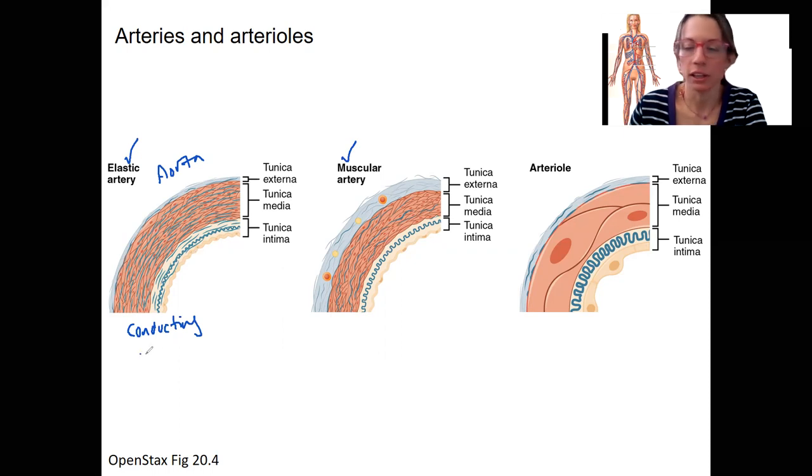These are fairly large and their job is to conduct blood away from the heart and maintain that pressure without losing pressure because they're able to expand and recoil. If they were rigid they would have high resistance, so their elasticity allows them to have low resistance and allow blood to pass through without losing pressure very quickly.